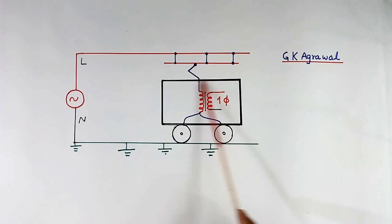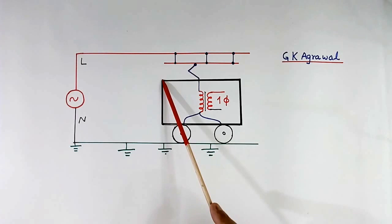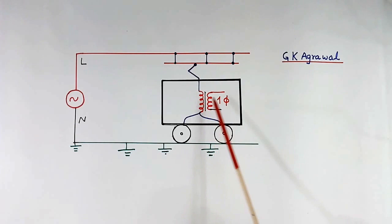This is train engine. This is AC supply. From AC supply, only one wire is coming, Line. In train, there is a transformer inside. Step down transformer.